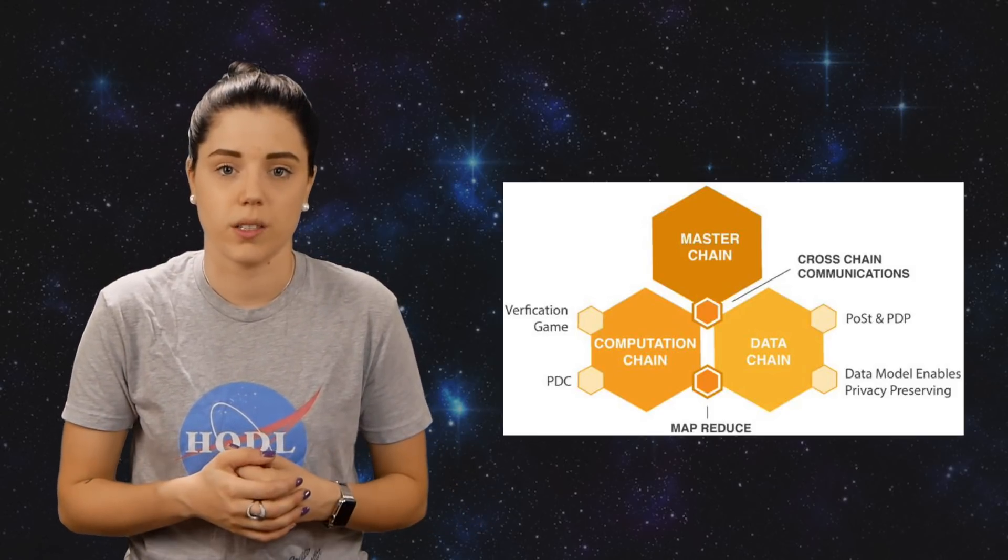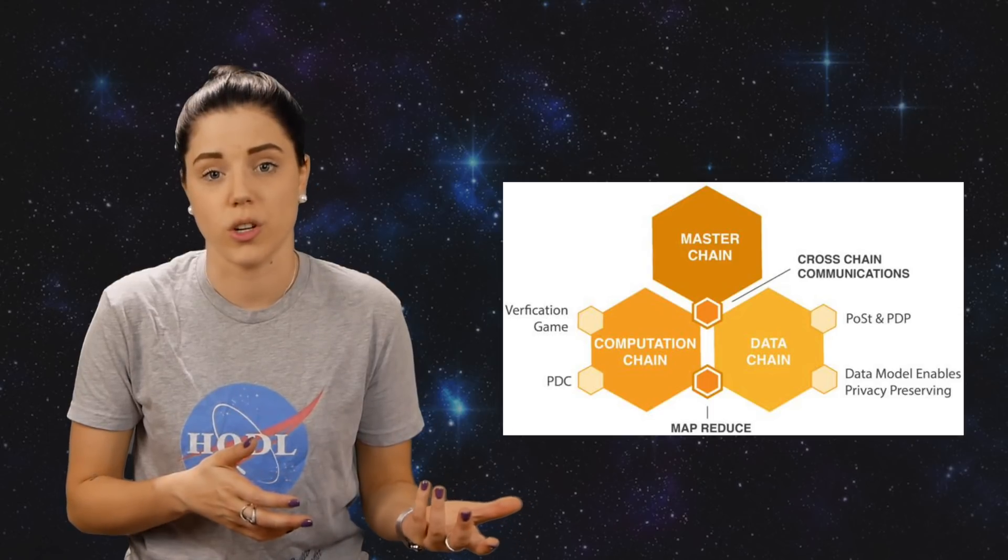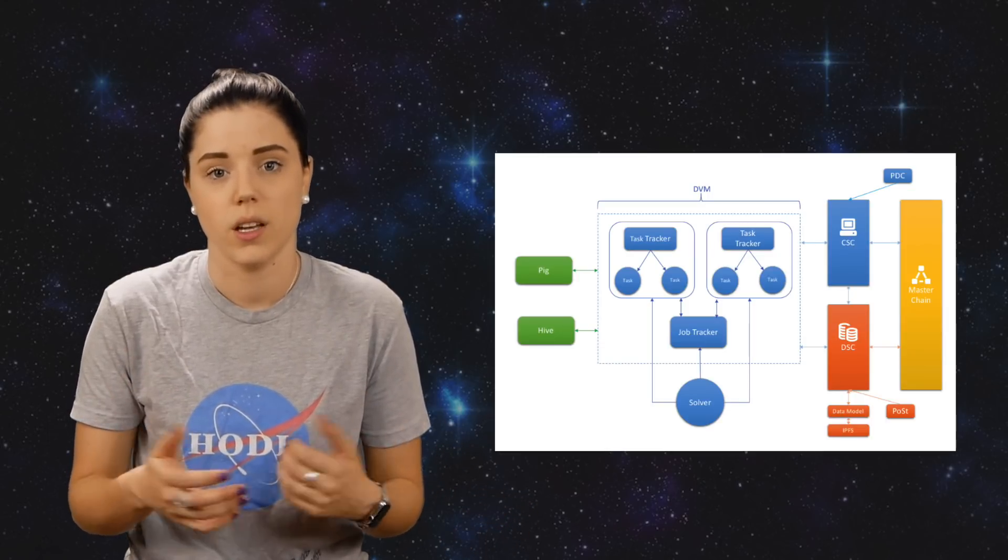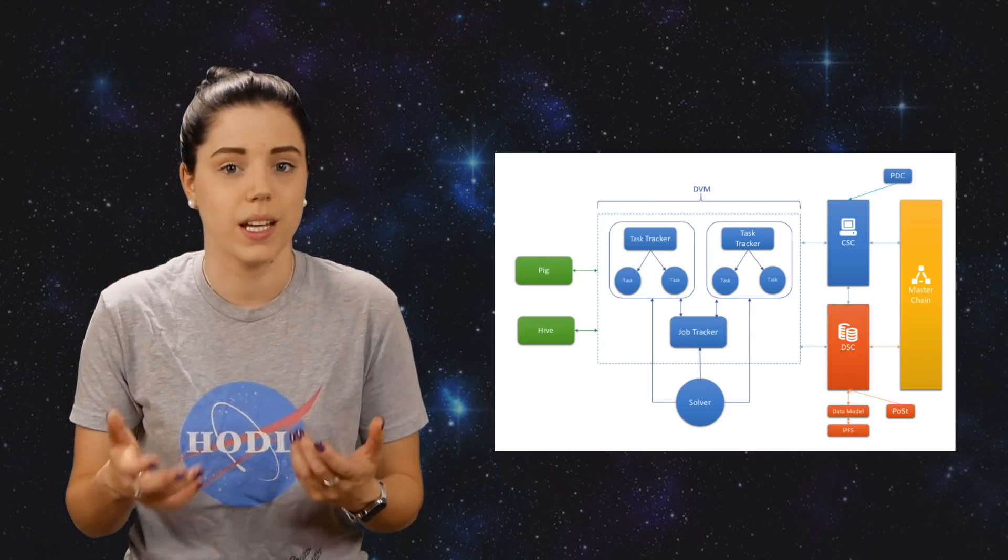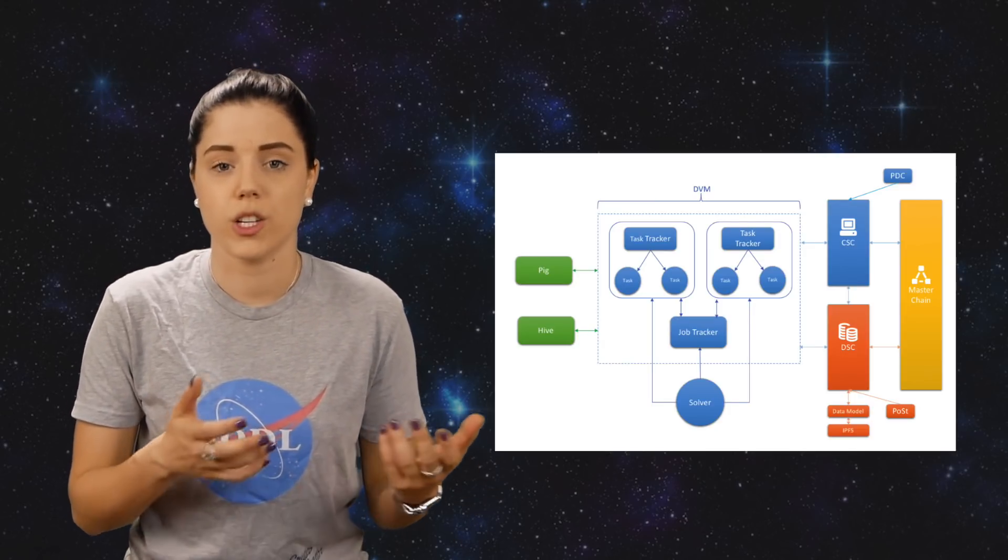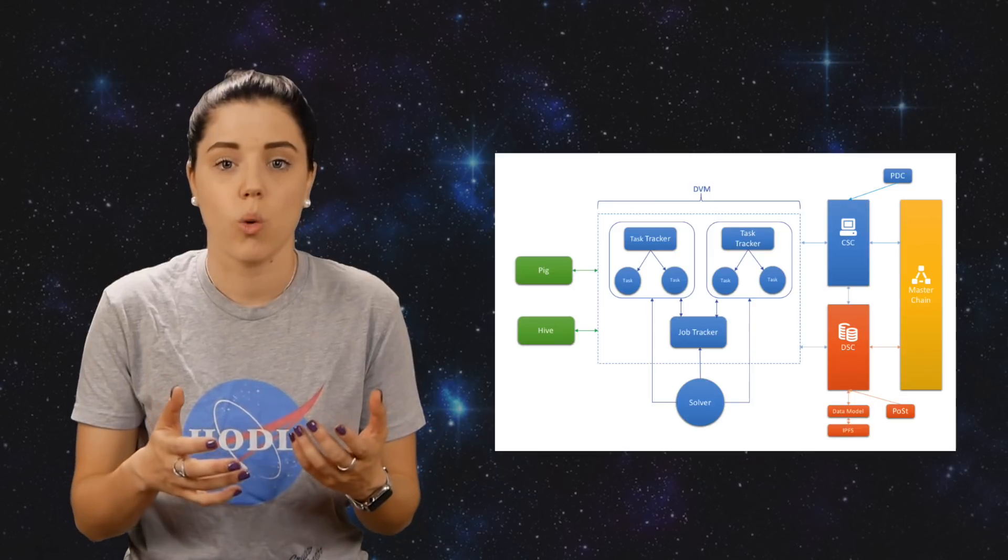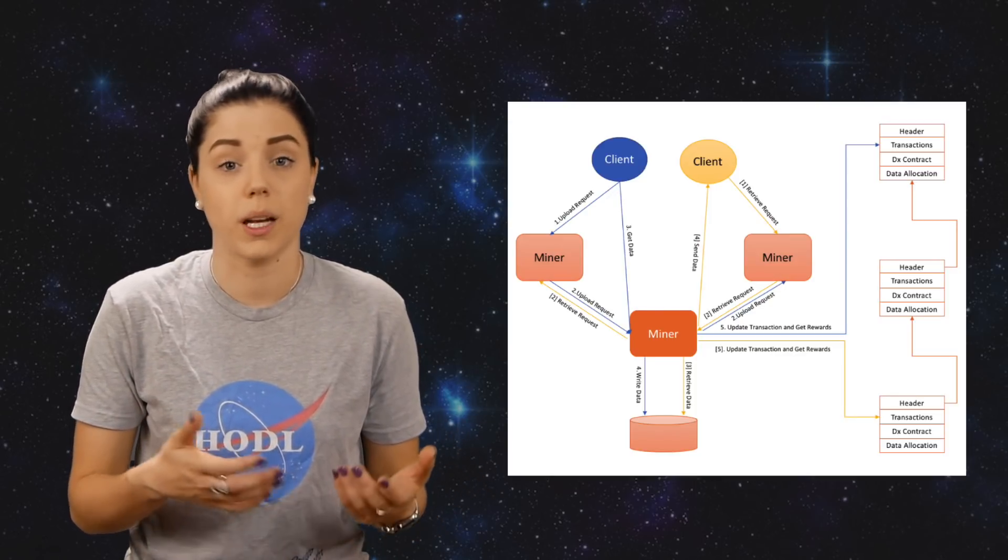DX chain has a few components that make up the project. They will be utilizing a multi-chain structure. The first, which is their master chain, stores asset information such as states, transactions, receipts, and contracts. It is in charge of providing transaction related operations while coordinating with the other two chains. This chain will utilize proof of work as its consensus protocol because it requires the highest level of security and stability.